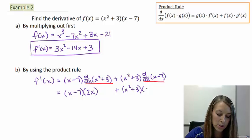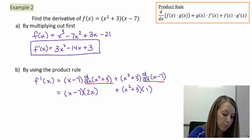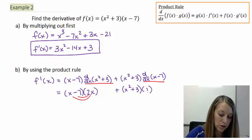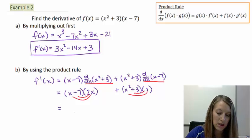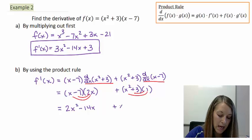So simplifying this by distributing my 2x and kind of distributing my 1, but we don't need to because anything times 1 is itself. This gives me 2x squared minus 14x plus x squared plus 3. Combining my terms, 2x squared plus x squared gives me 3x squared minus 14x plus 3.